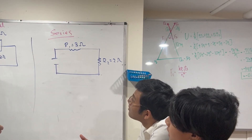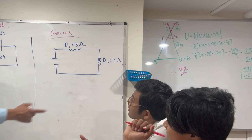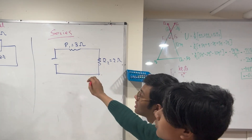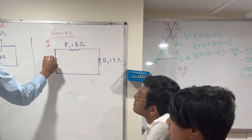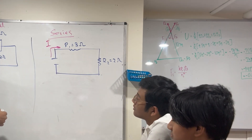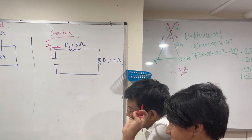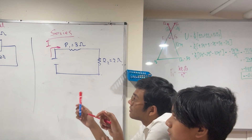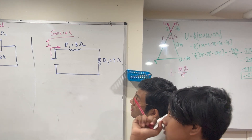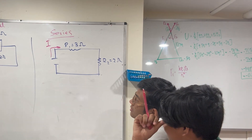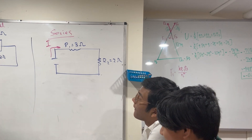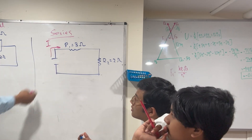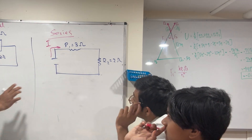Why is this series? Because the current is the same — it has one path from positive to negative. Why is this parallel? Because it has two paths from positive to negative. The voltage is the same but the current is different — current has more than one path.